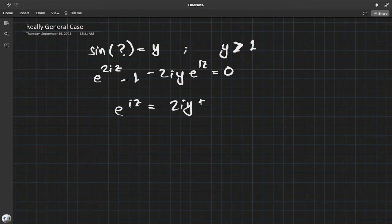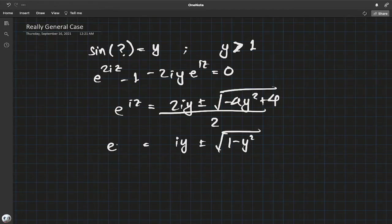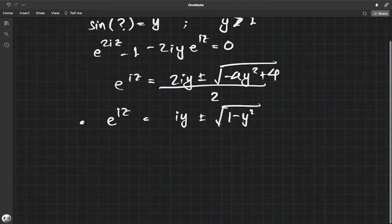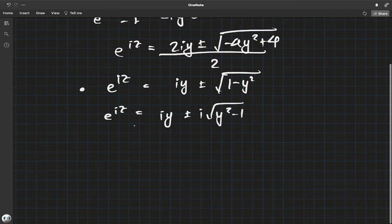We get e^(2iz) - 1 - 2iy·e^(iz) = 0. I'm just skipping some steps now, it's pretty much like we did with π. e^(iz) equals 2iy plus or minus square root of -4y² + 4 over 2. Cancel some things out: iy plus or minus square root of 1 - y².